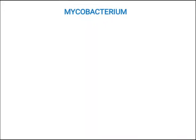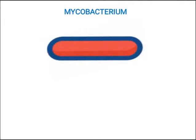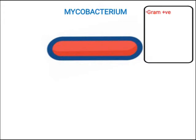Welcome back. Mycobacterium is a rod-shaped bacterium. It is nearly gram-positive — we cannot completely call it gram-positive because its cell wall composition differs — but it is truly considered nearly gram-positive. It is also typically an acid-fast bacterium. Acid-fast bacteria have more lipid content in the cell wall in the form of mycolic acid, which is why we call them acid-fast bacteria.